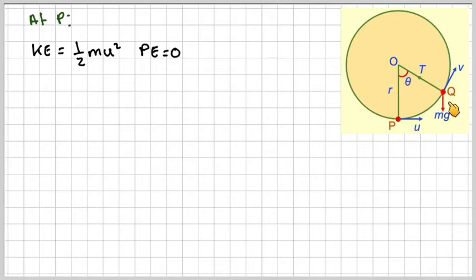And then at Q, the kinetic energy will be a half M V squared, which is what we've got to find the expression for V. And now the potential energy is M G H, where H is the vertical height, so we'll need to find the vertical height.